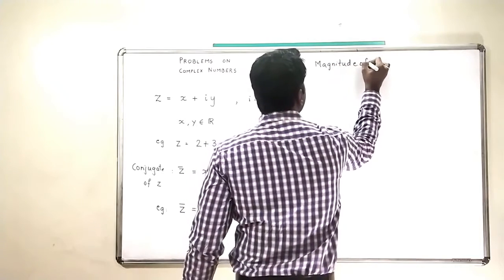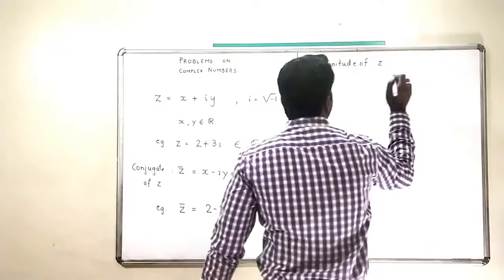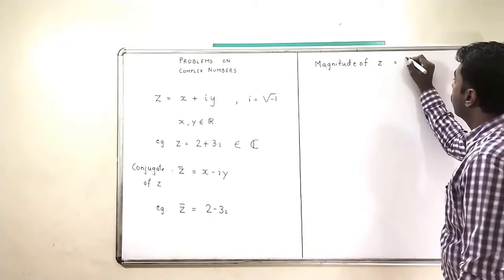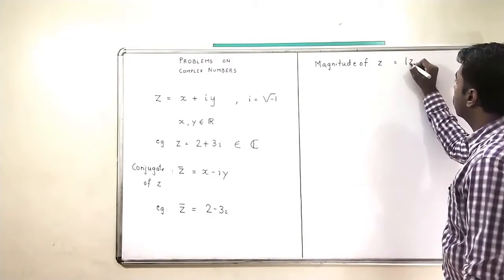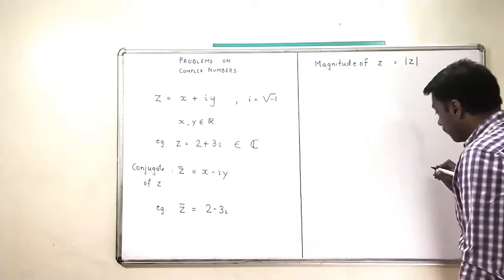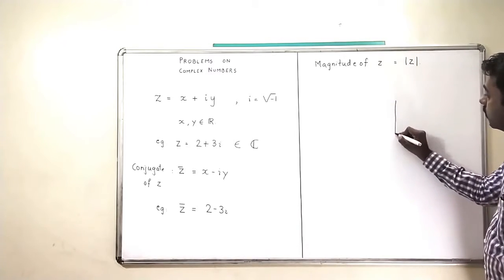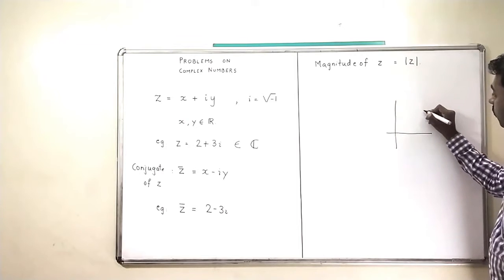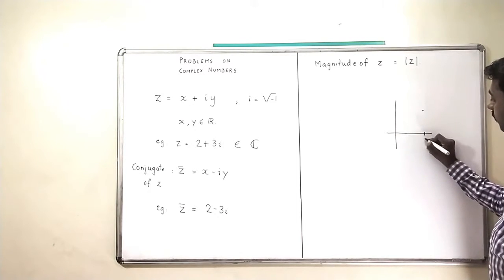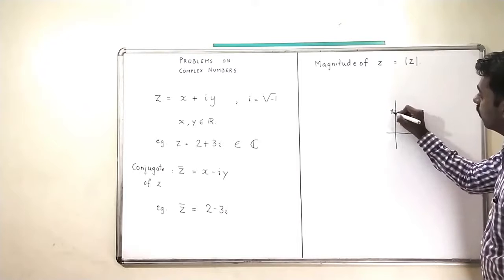What is the magnitude of Z? The magnitude of Z is denoted by mod Z. And if I draw a picture of a complex number, which has an X coordinate here, and here I have a Y coordinate.